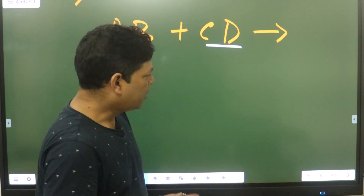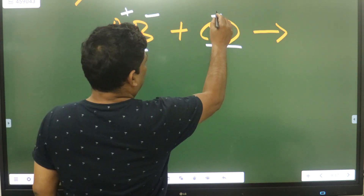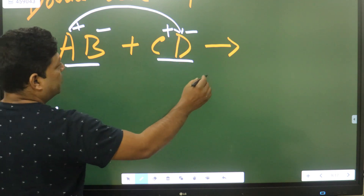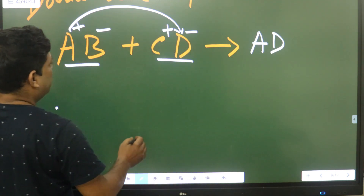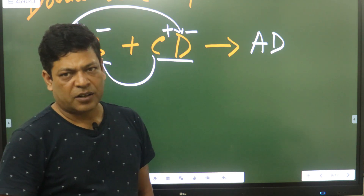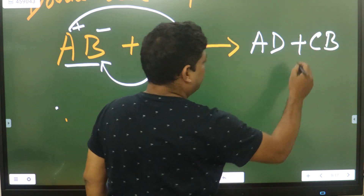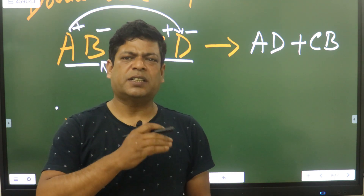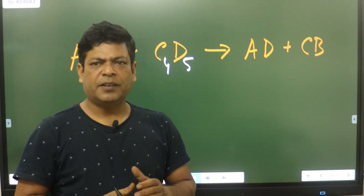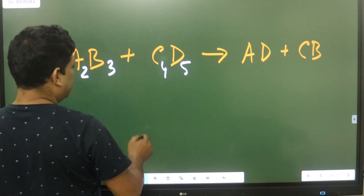So we have double displacement. When we have a compound AB — positive and negative — and the second compound is also positive and negative, the product will be AD and CB. The formula will be positive and negative.